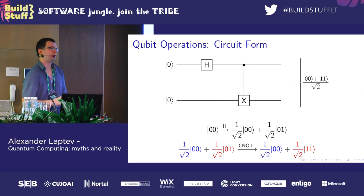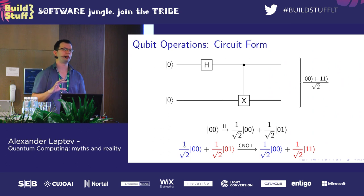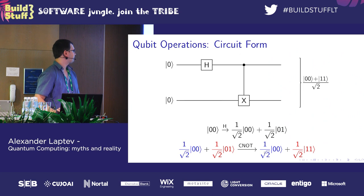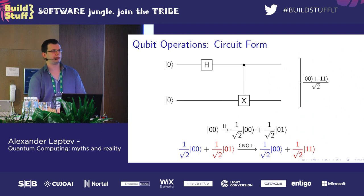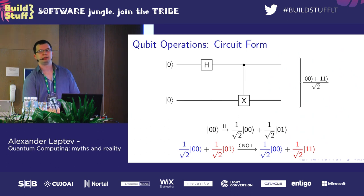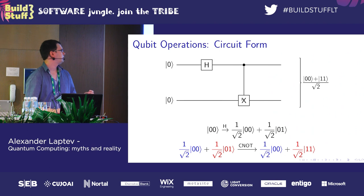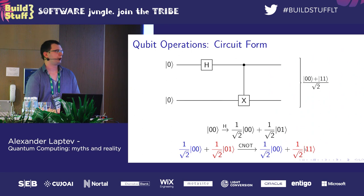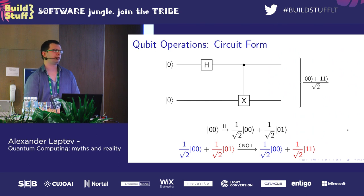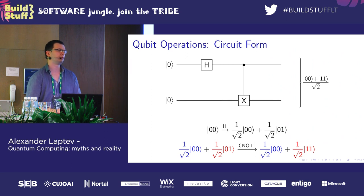Most operations over multiple qubits are based on these controlled operations. That means we have only a few main functions in any quantum circuit.